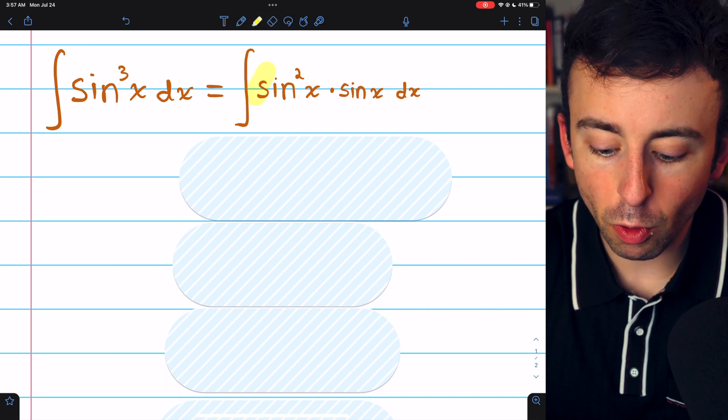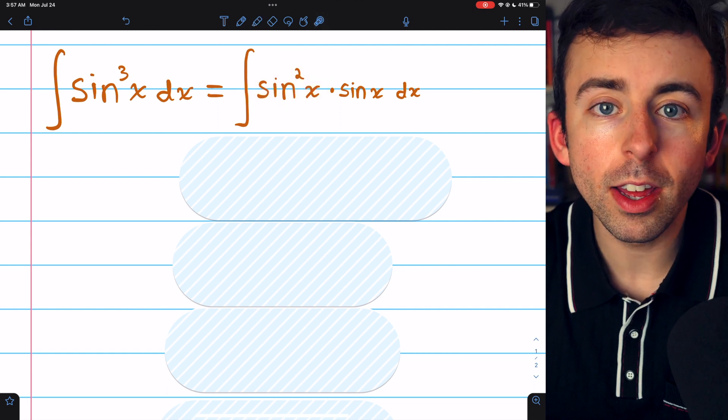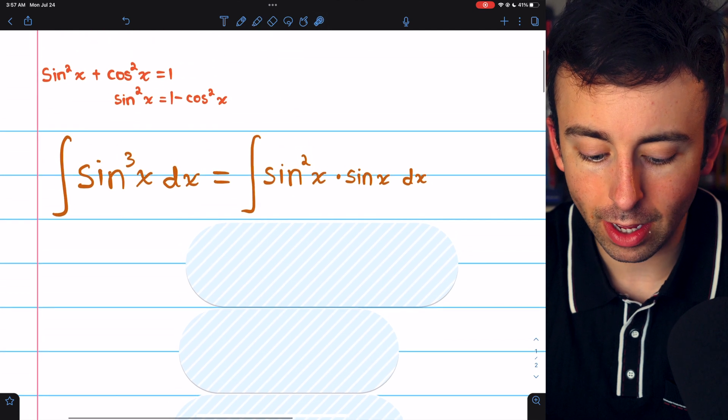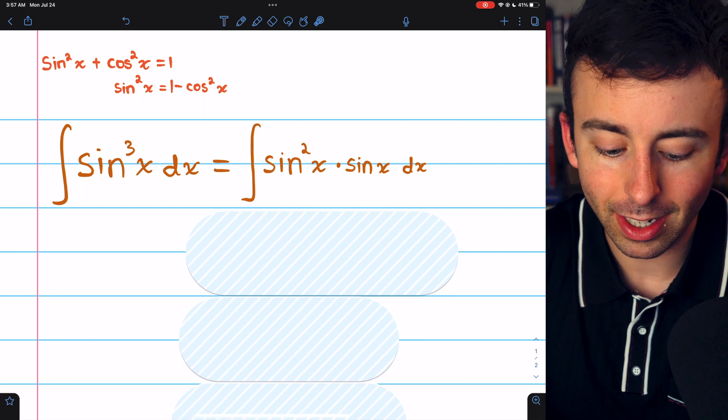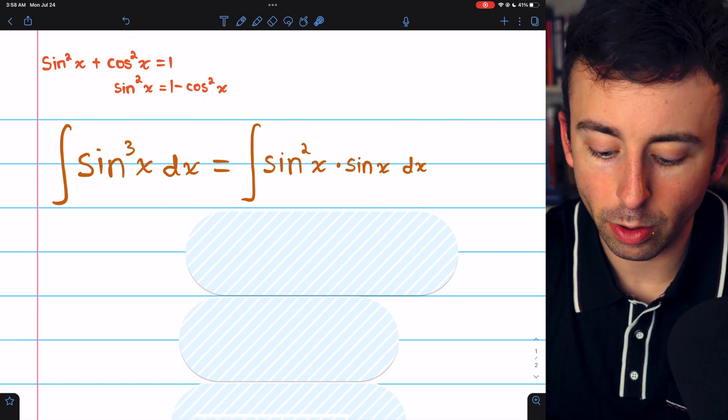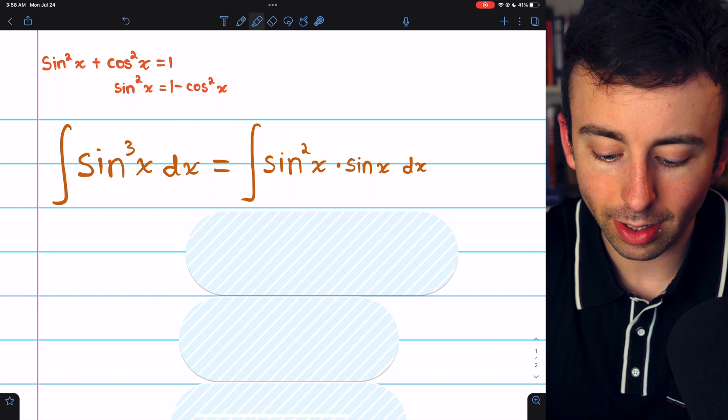Then we can replace this sine squared with one minus cosine squared because of the Pythagorean identity. Sine squared plus cosine squared is one, and so sine squared equals one minus cosine squared.